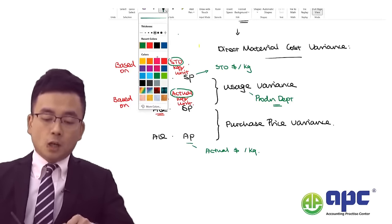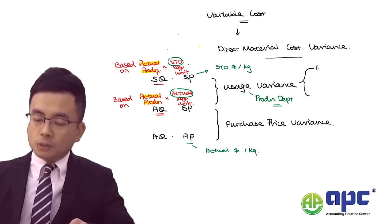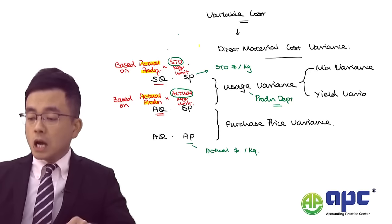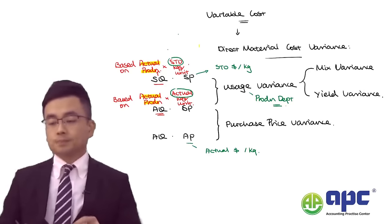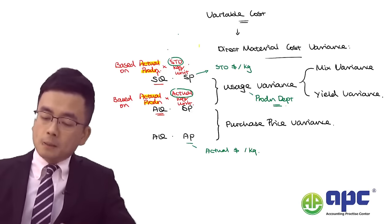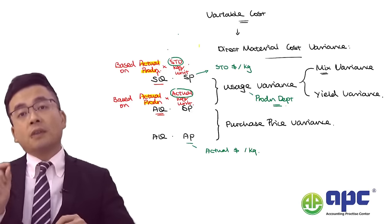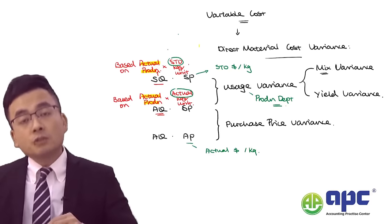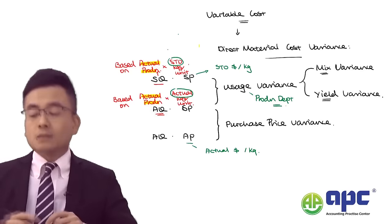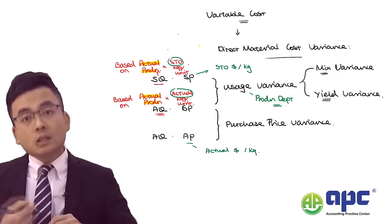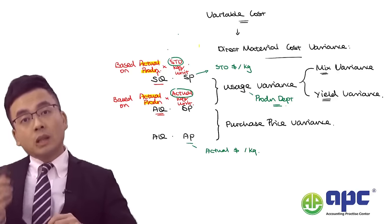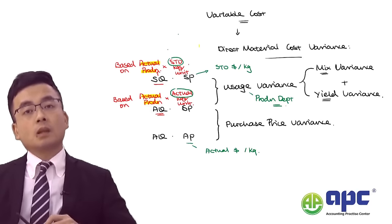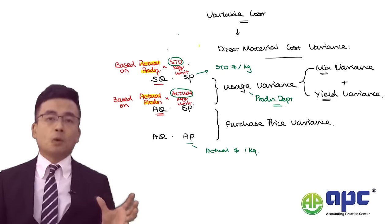The usage variance can be further broken down into the material mix variance and the material yield variance. Mix refers to whether changing the component proportions in making the product has an overall impact on cost. Yield means whether changing the mix results in producing more or fewer output units — in other words, whether it is efficient. Mix plus yield equals the usage variance.